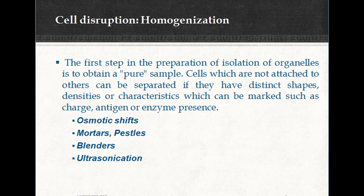Cells which are part of a tissue first need to be separated out from all connections with other cells. This can be done by using a chelating agent or by enzymatic or non-enzymatic mechanical disaggregation. These result in changes to cell-cell connections such as desmosomes and tight junctions.